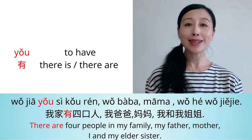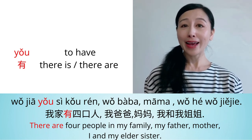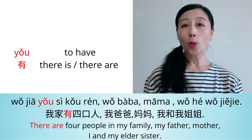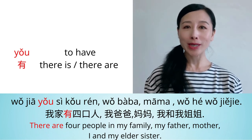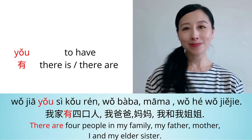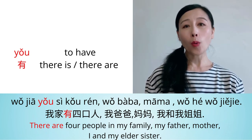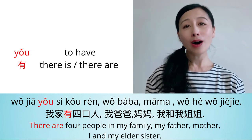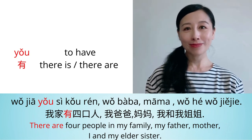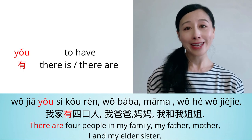You can also make a longer sentence. There are four people in my family: my father, mother, I, and my elder sister. 我家有四口人，我爸爸，妈妈，我和我姐姐. 有 literally means 'to have,' but it also means 'there is' or 'there are.'